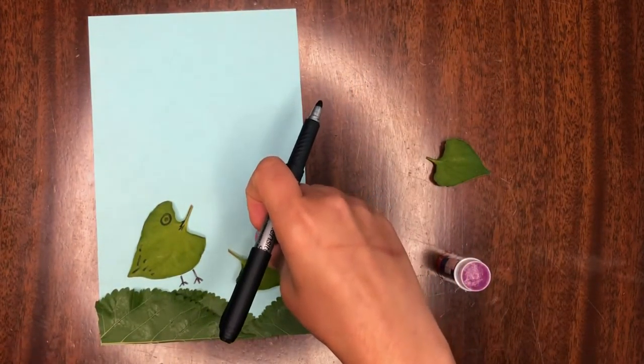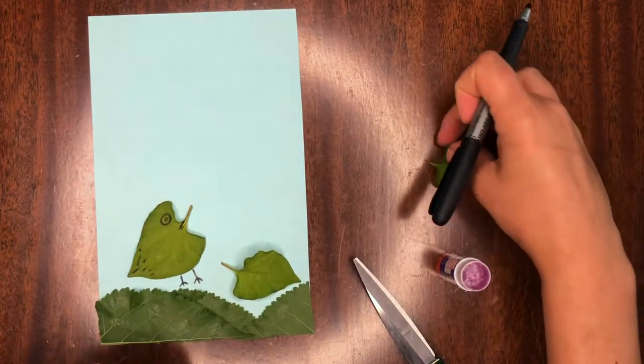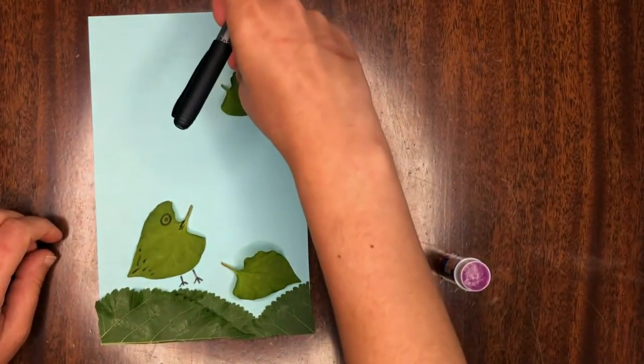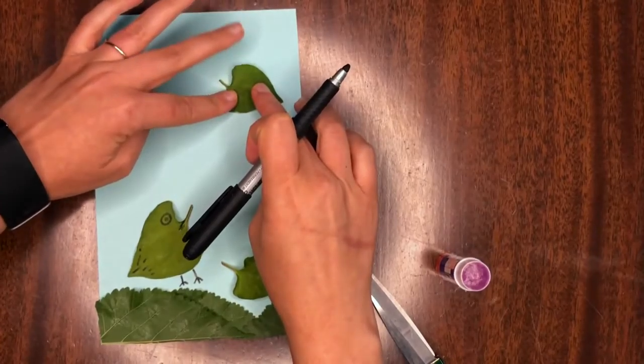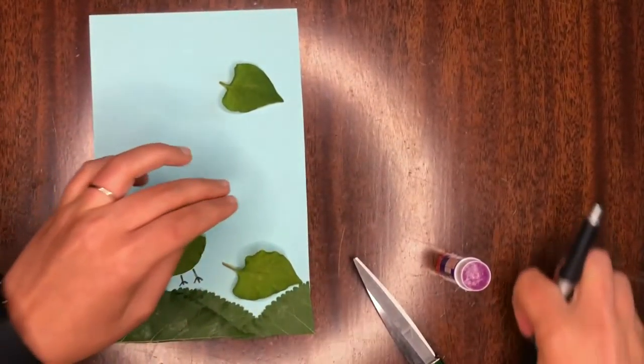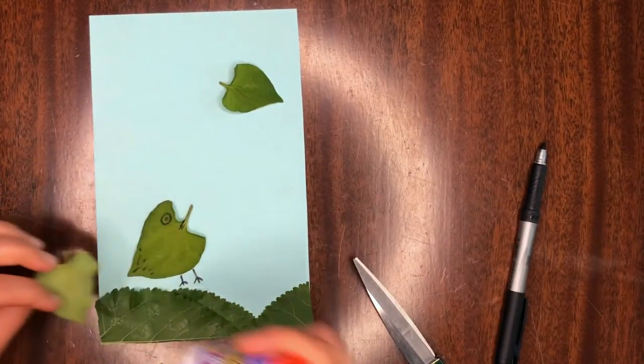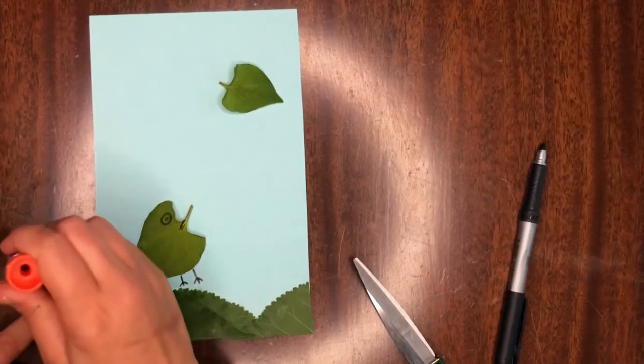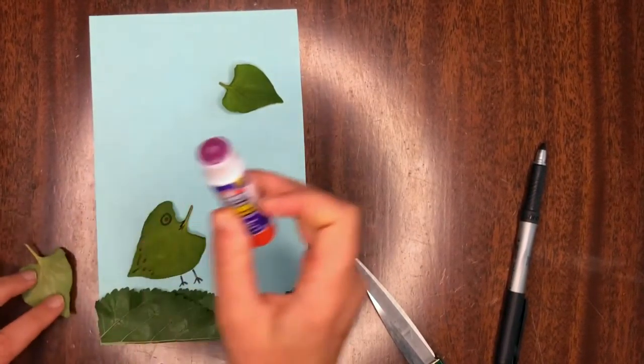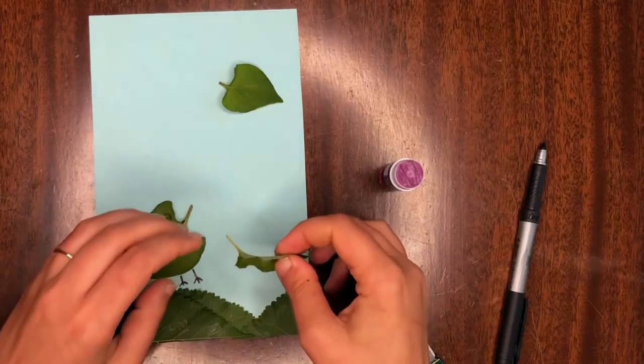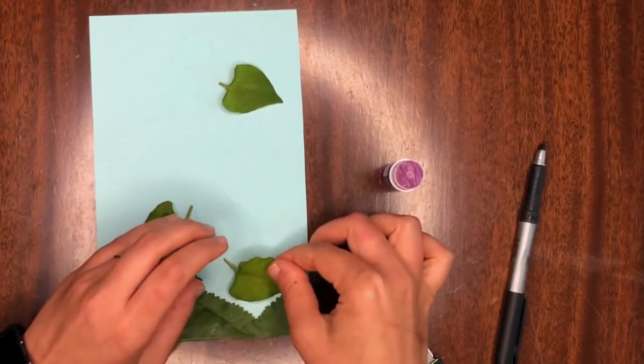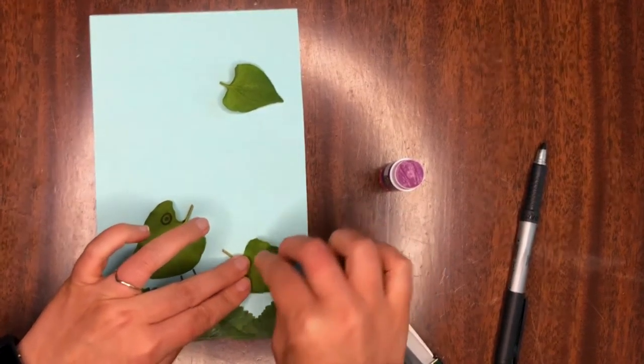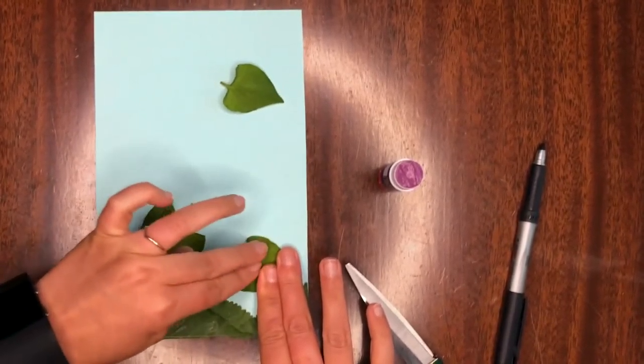Now we can go ahead and add our other little bird. I'm going to put one up in the sky flying and my other one down here. And your leaves might look different than mine. And maybe they look more like a bird than mine do, but I'm using my imagination and I'm having a good time doing it.